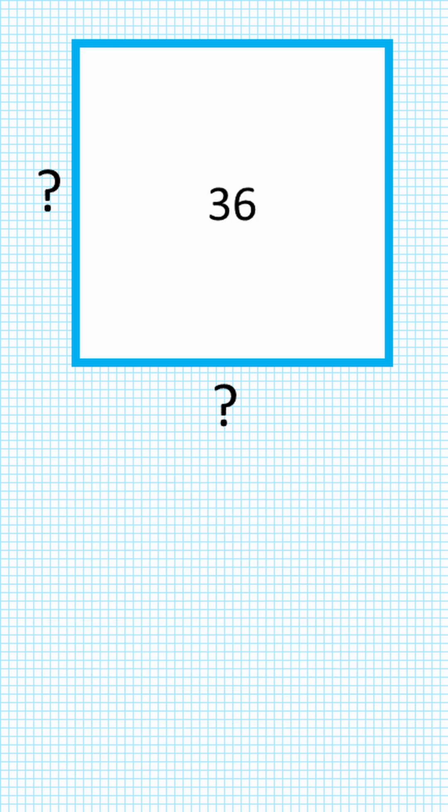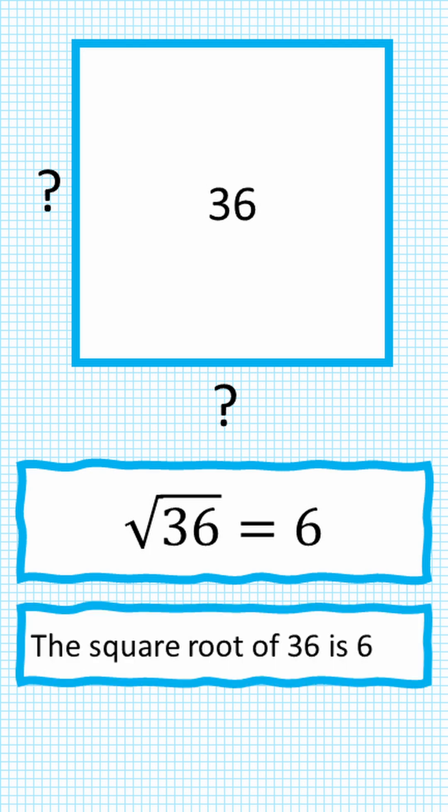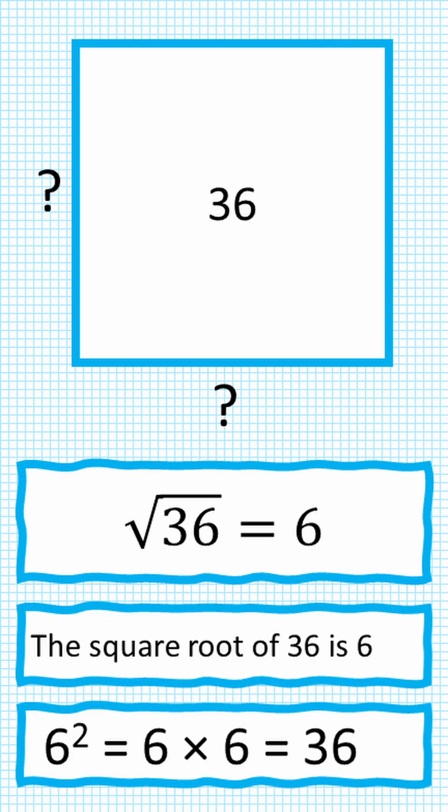And one more, the square has an area of 36. How long is the side? We find the square root of 36 is 6, and that is because 6 squared, or 6 times 6, equals 36.